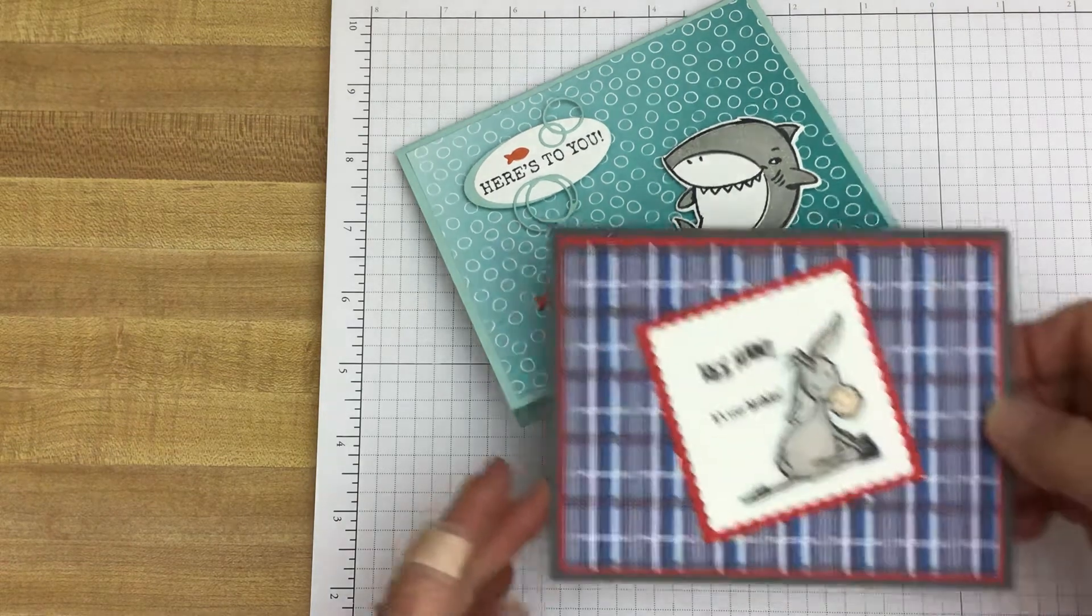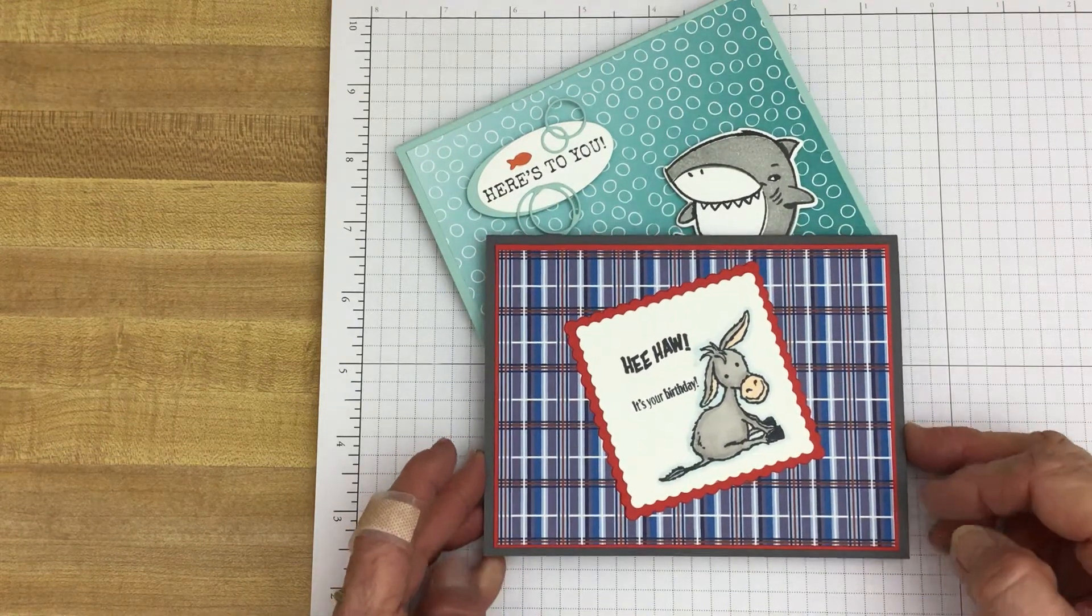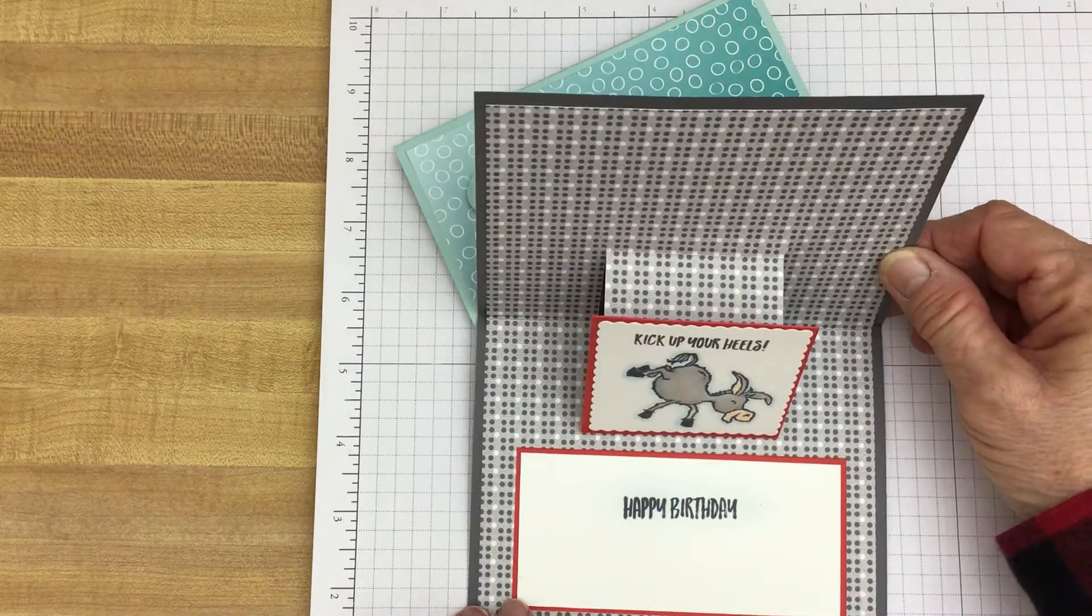The first one here I'll show you is the little donkey card. I made this card using the Darling Donkey stamp set. There you go, pops up.